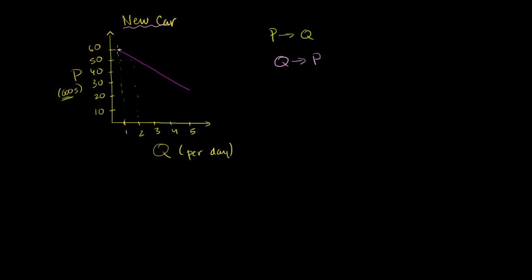We don't say, how many will we sell at a price of $60,000, or how many are we going to sell at a price of $50,000. We'll go from the point of view, what if we only produce one car a week?